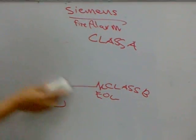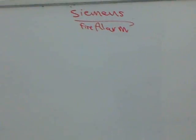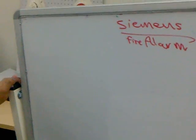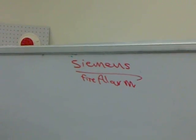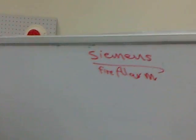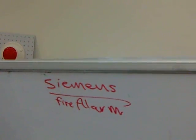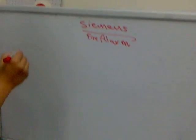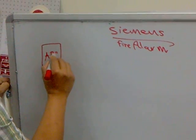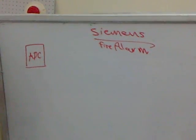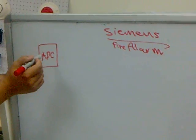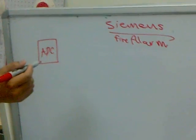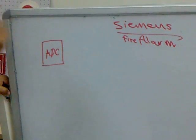Now we go through the detail of the cards — detector and notification. We will start with the EDC card. Where do we put this card? This card must be mounted in the cabinet — either cabinet 2 or cabinet 3. This EDC card can handle two loops.